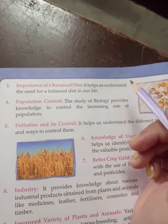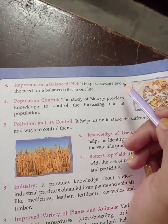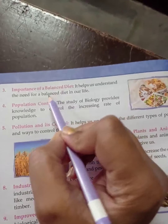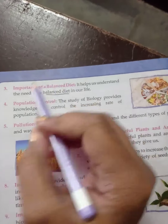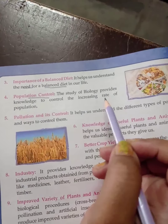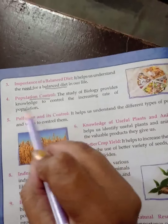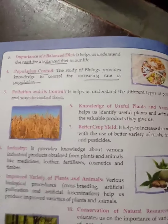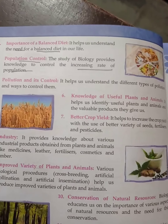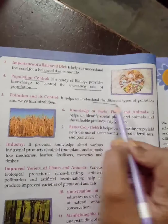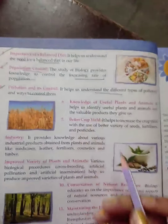Next is the importance of a balanced diet — biology पढ़ने से हमें पता चलता है कि हमारी body को किस balanced diet की ज़रूरत है। Population control — biology हमें सिखाती है कि population और उसकी increasing rate को कैसे control करना है। Pollution and its control — biology में हम different types के pollution और उन्हें control करना पढ़ेंगे।